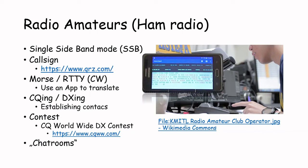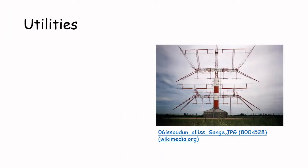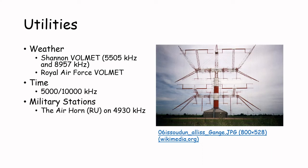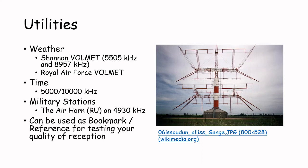You can join these chat rooms as a listener just by navigating to the frequency. You can also listen to the so-called utility stations. As described on wikipedia.org, utility stations are not intended for reception by the general public, and they broadcast signals that have an immediate practical use, like weather stations, time stations, or military stations. You can also use these frequencies as bookmarks or reference for testing the quality of your current reception.